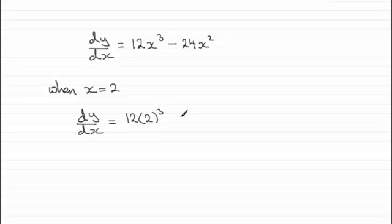I'll just show the working. Minus the 24 times 2 squared. And we can see that what we get here is 2 cubed is 8, 12 times 8 is 96. And then we've got 2 squared is 4, and then 24 times 4 is 96. So we end up with minus another 96, and that gives us 0.